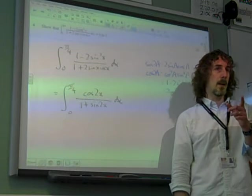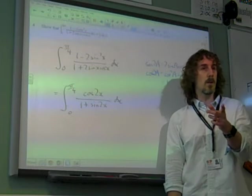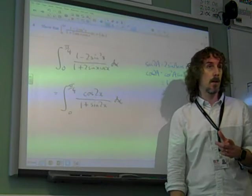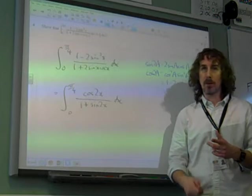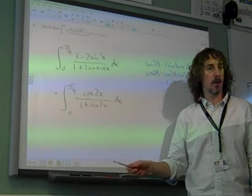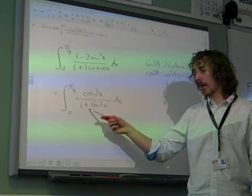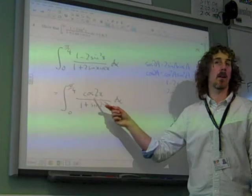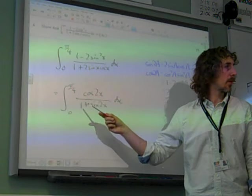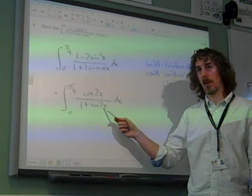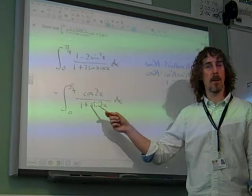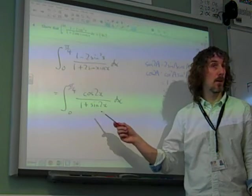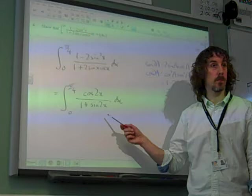Then you've got to spot something else, and it's something we should always be looking for. There was a clue in the natural log. We just have to notice that if you differentiate 1 plus sin 2x, you get something closely related to cos 2x. If you differentiate 1 plus sin 2x, the 1 goes to 0. Differentiate sin 2x and we get 2 cos 2x.